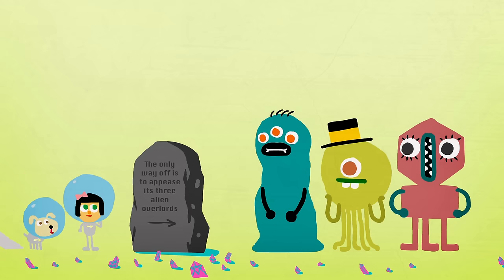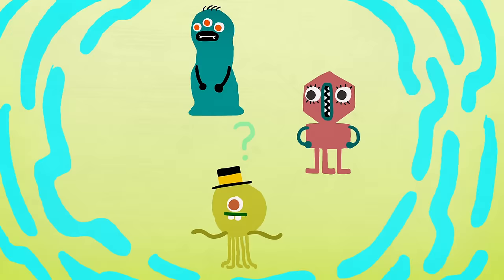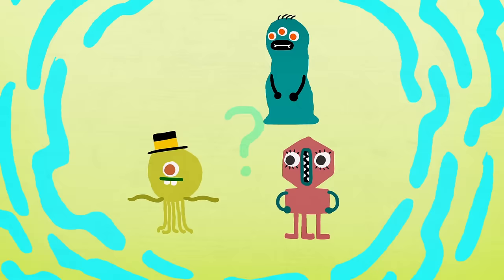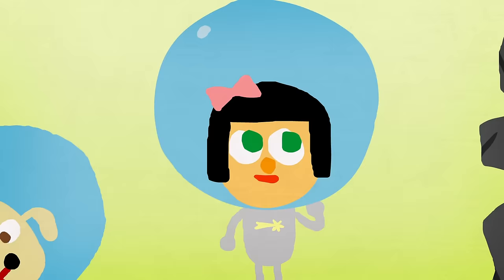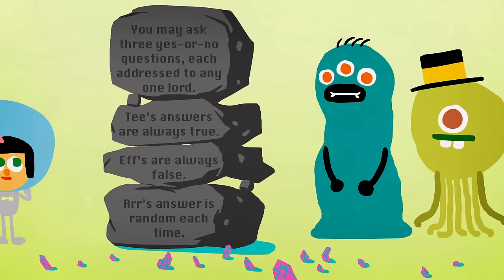You and your team have crash-landed on an ancient planet. The only way off is to appease its three alien overlords, T, F, and R, by giving them the correct artifacts. Unfortunately, you don't know who is who.